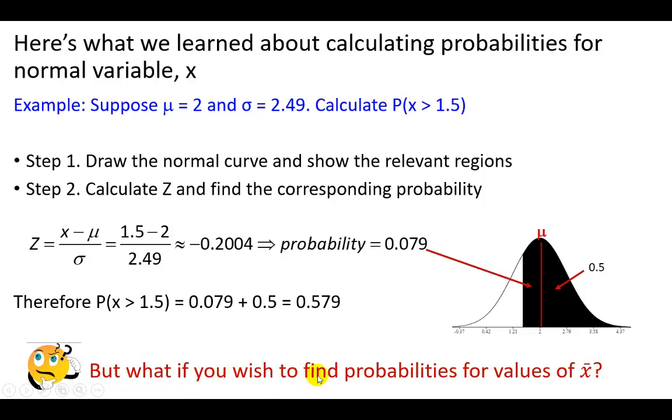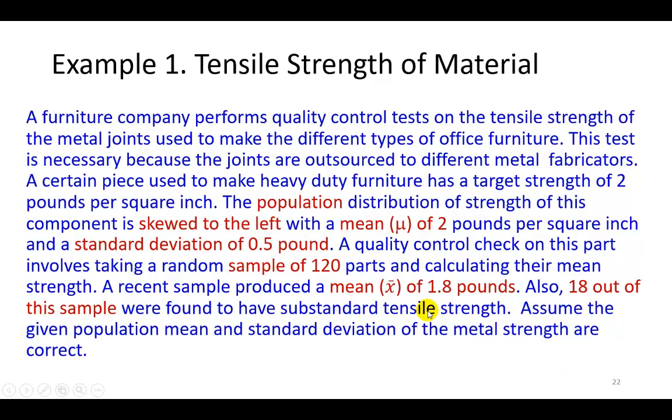However, if you wish to find probabilities associated with not the random variable X, but rather with the sample mean, with the average earnings per share, as opposed to earnings per share of a particular firm, well, to explain how that works, here's a mini case. You can pause this video and read it. However, the key things out of this are in red.